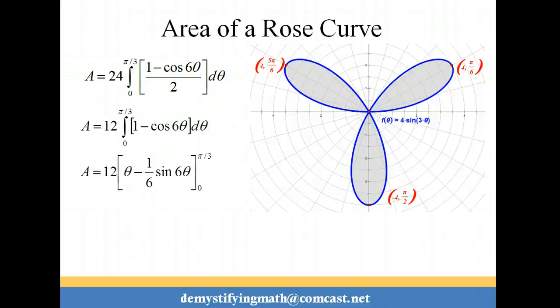So the integral of 1 is theta, and the integral of the cosine is the sine. And then we had to make an adjustment for the 6 times the angle, so it's negative 1 6 sine 6 theta. And now we're ready to put in our endpoints of integration.